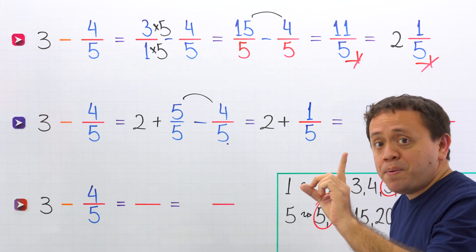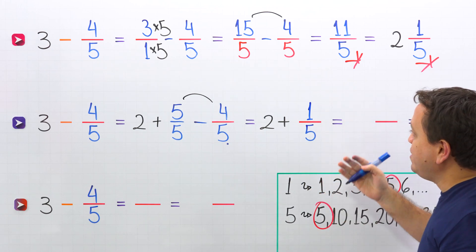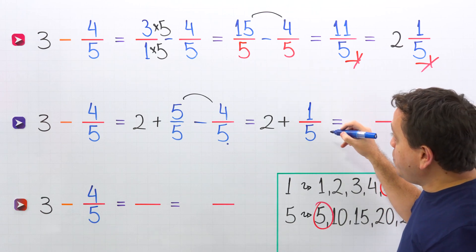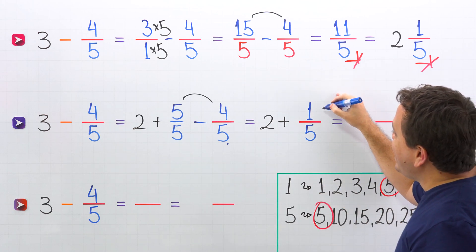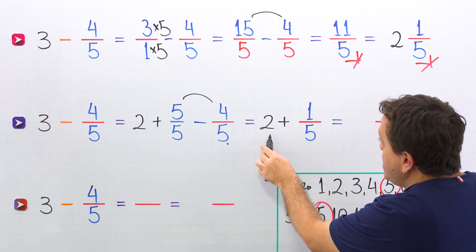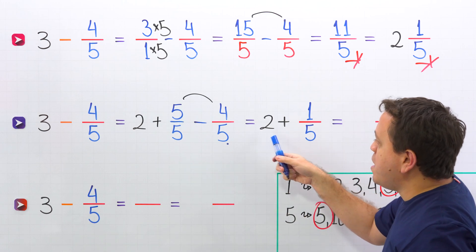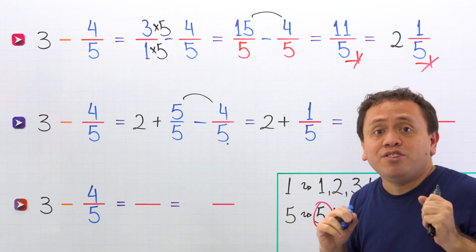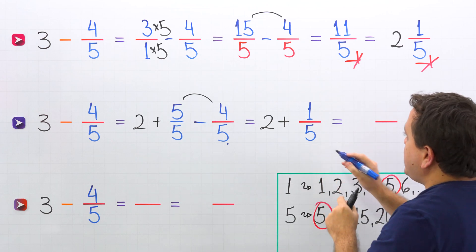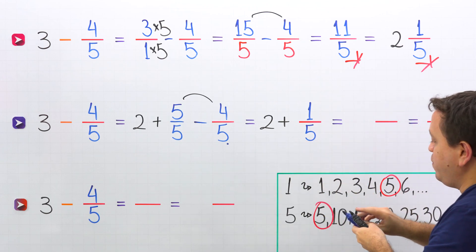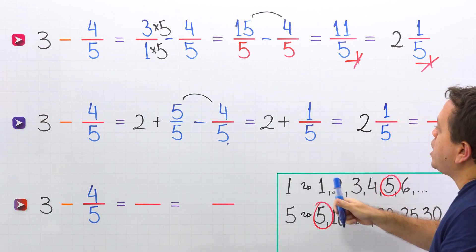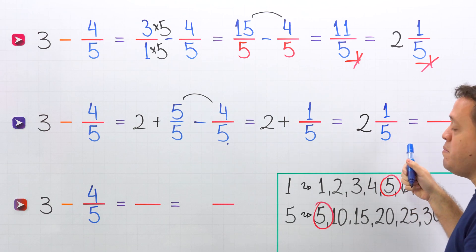At this point, we should remember proper fractions. A proper fraction is a fraction where the numerator — the top number — is less than the denominator, the bottom number. 1 fifth is a proper fraction, given that the numerator 1 is less than the denominator 5. So here we have the sum of a whole number and a proper fraction. That is the definition of a mixed number — a mixed number is the sum of a whole number and a proper fraction. So we rewrite the sum of 2 and 1 fifth as the mixed number 2 and 1 fifth.